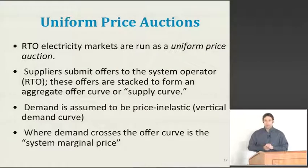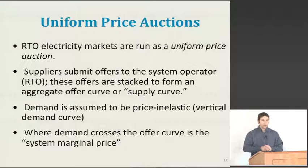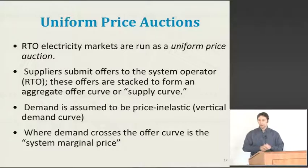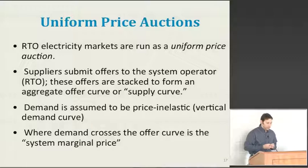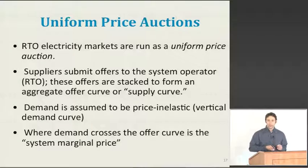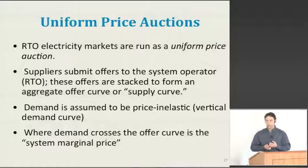The pool-type market has really become the dominant market model used in the U.S. today. The pool-type market was more or less what FERC's standard market design looked like, and so the markets that are run by regional transmission organizations are all run as what we call uniform price auctions.